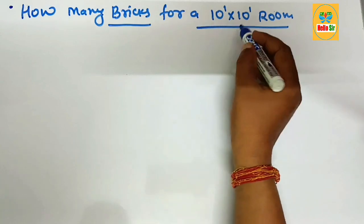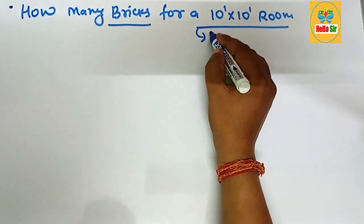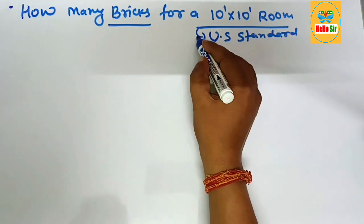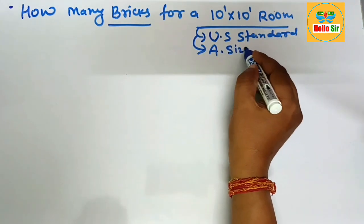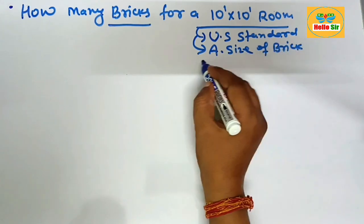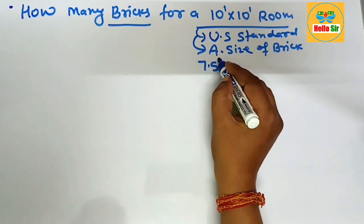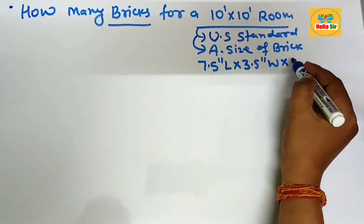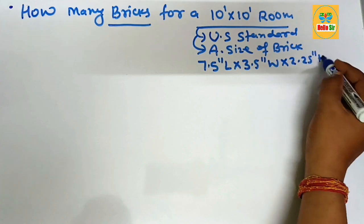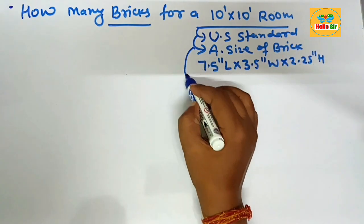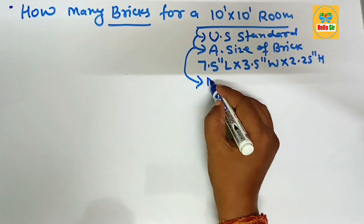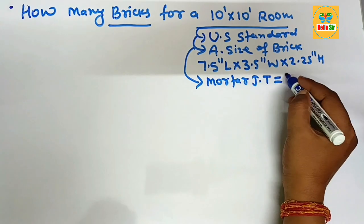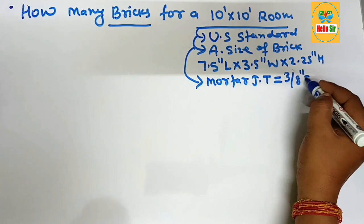As per United States practice, the standard actual size of a brick is about 7.5 inches in length, 3.5 inches in width, and 2.25 inches in height. The mortar joint thickness is about 3/8 inches, which is equal to 0.375 inches.